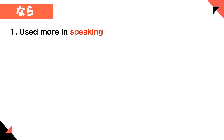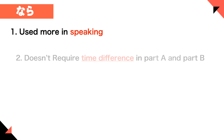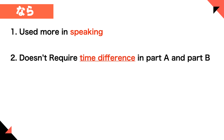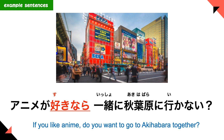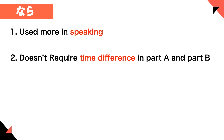Now we are going to learn the characteristics of nara. First, it is used more in speaking than in writing. Second, it doesn't require time differences between part A and part B. For example, in 'anime ga suki nara, issho ni akihabara ikanai?' — you can like anime and go to Akihabara at the same time, so nara doesn't require a time difference between the two parts.